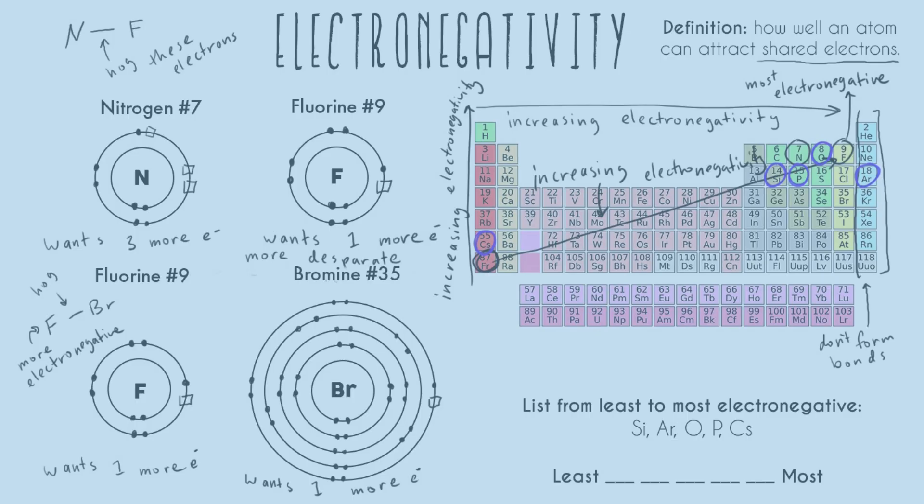So now we just follow our trend line. So again, I would personally say that argon is the least electronegative. So I would put that here. It's a noble gas. It's never going to form bonds. It just is not electronegative at all. And then next, we have cesium, that's clearly the bottom left.